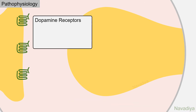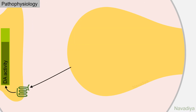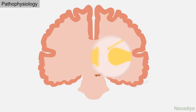Let's quickly see dopamine receptors. Dopamine receptors are of 5 types: D1 to D5. They are all G protein-coupled receptors. D1 and D5 are excitatory type, and D2, D3, and D4 are inhibitory type. Now apart from these dopaminergic neurons, there are also cholinergic neurons which produce cholinergic activity.